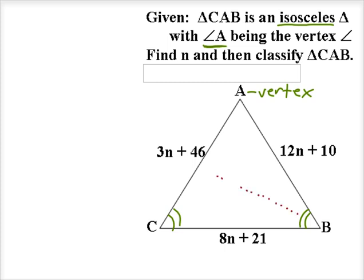So the side opposite B refers to that segment AC. The side opposite C refers to the segment AB, and so that means 3n plus 46 and 12n plus 10 must be congruent.